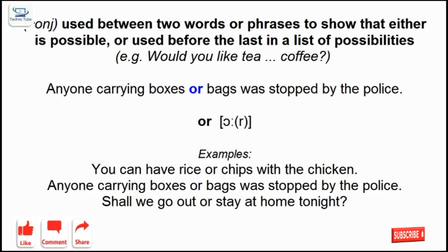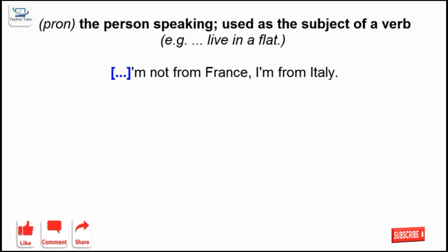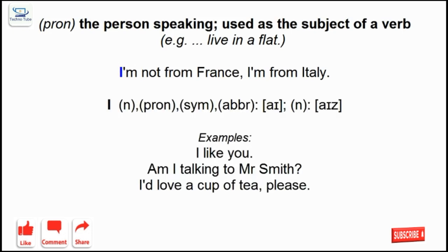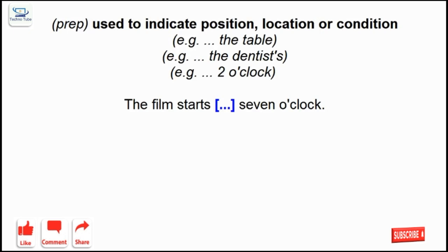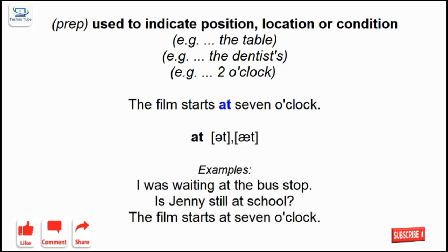Or: used between two words or phrases to show that either is possible, or used before the last in a list of possibilities. I: the person speaking, used as the subject of a verb. At: used to indicate position, location or condition.